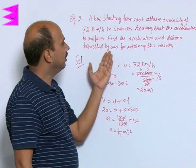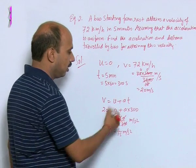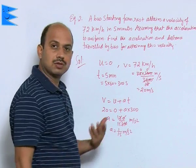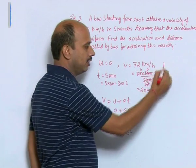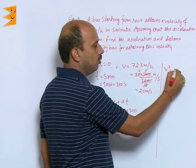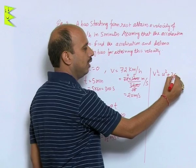Now, we can calculate distance. We can apply the third equation, third relation, that we did v squared equals u squared plus 2as.